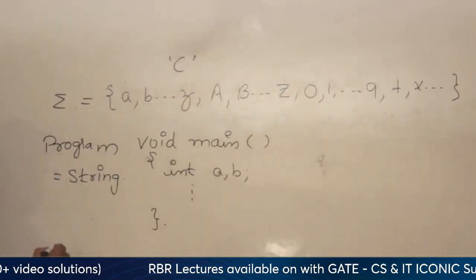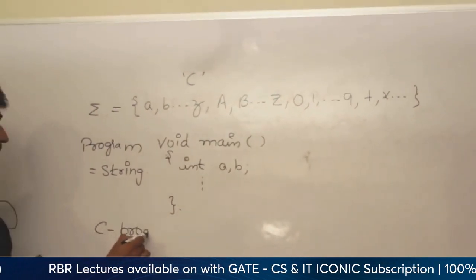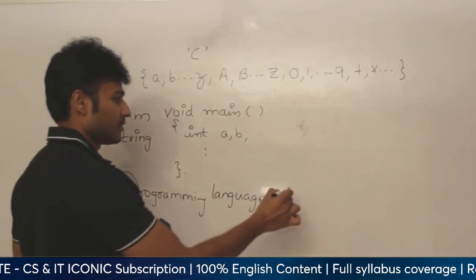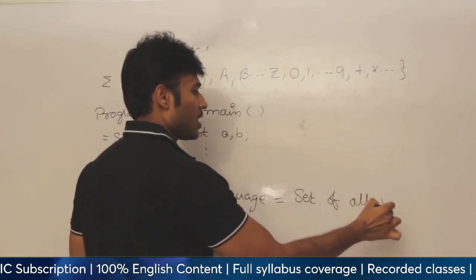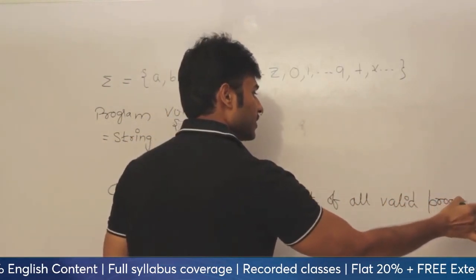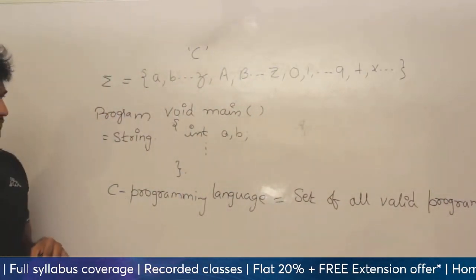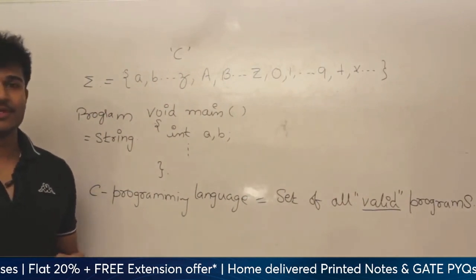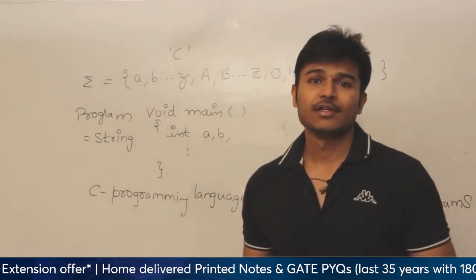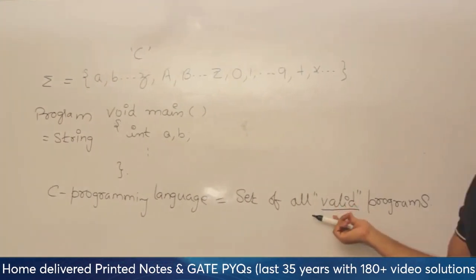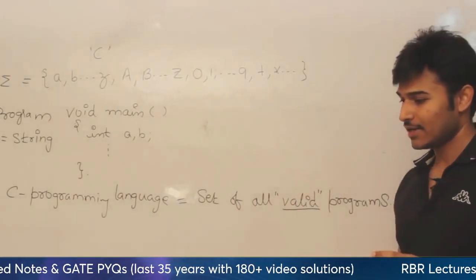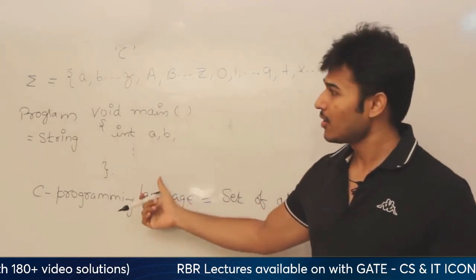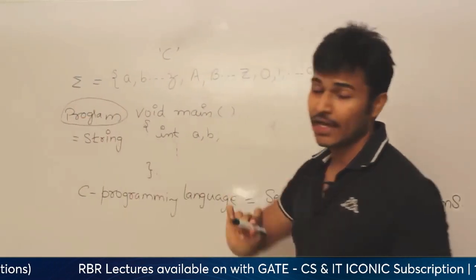Interesting. Now, the question is: what is C programming language? C programming language is nothing but the set of all valid programs. The important word is 'valid', which means there can even be invalid programs, which will give you some error when you compile or run it. The interesting question here is: what are the valid programs, and given any program, how can I say that the program is valid and the program is invalid? How many programs are possible over C programming language? The answer is infinite.